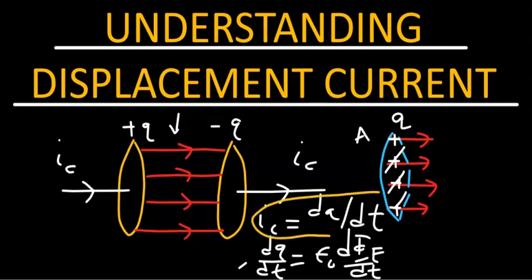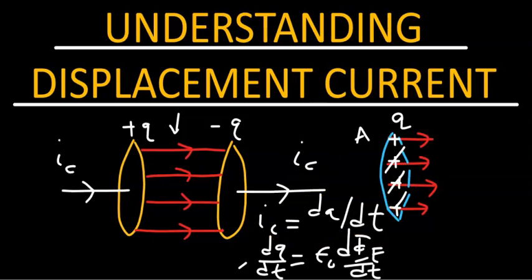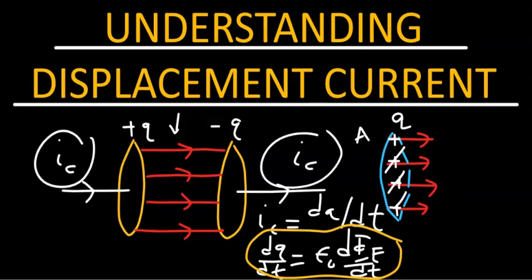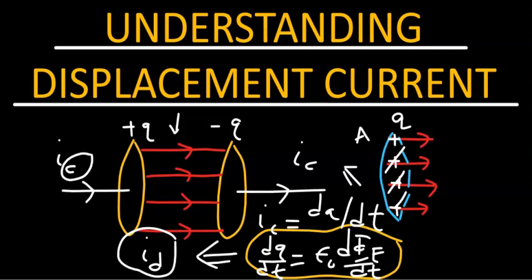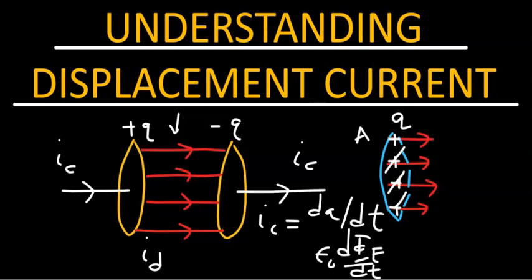Note that the conduction current in the wire is dQ/dt. Now we have worked out another expression by looking at the region in between the plates, and we found dQ/dt is related to the rate of change of electric flux. The first equation refers to the process occurring in the wire. The second equation explains what's happening in the region in between. To ensure the continuity of electric current from the left-hand side to the right-hand side, the concept of displacement current was invented, and this expression refers to the displacement current.